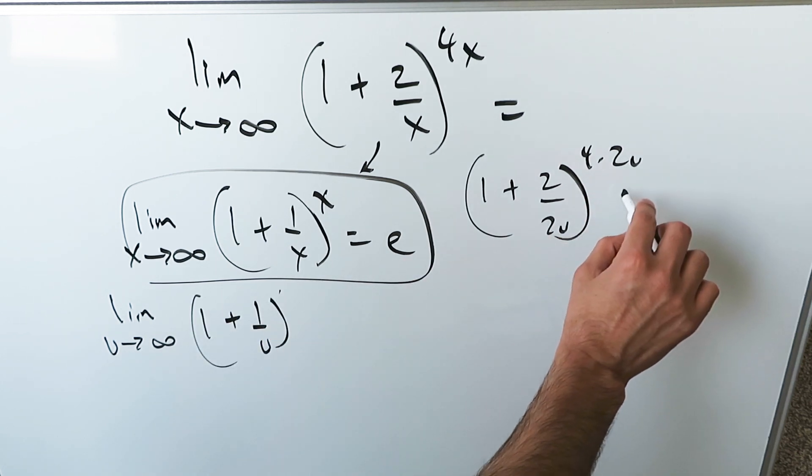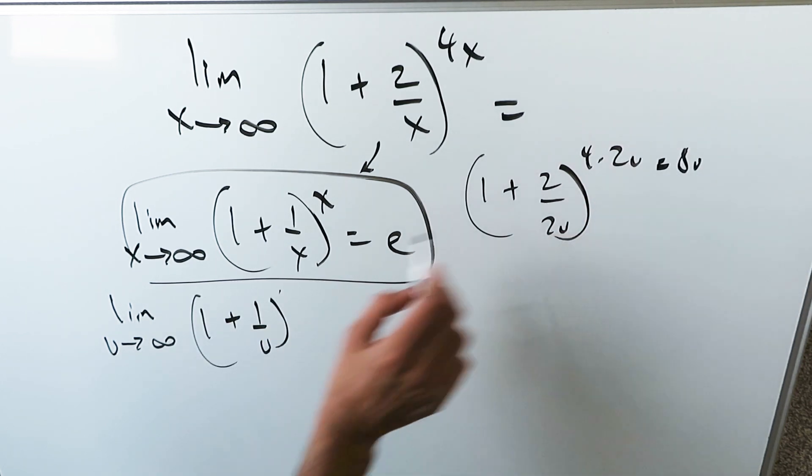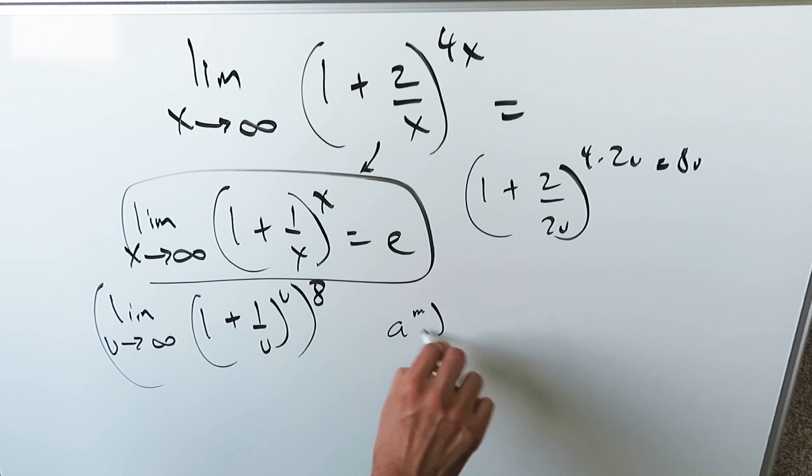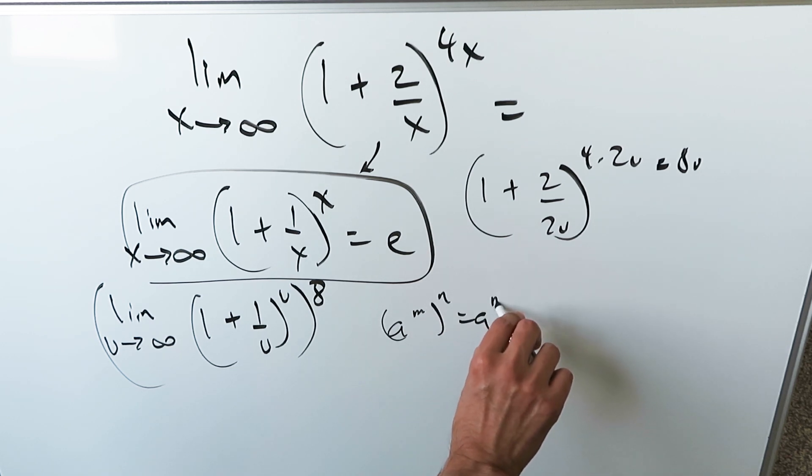But you see this 4 times 2 is equal to 8u. I'm only putting a u, and then that 8 I'm putting right over here. You see this, 8u, 8 to the power of m to the power of n equals 8 to the power of mn. That's what I've done, but I've separated them out.